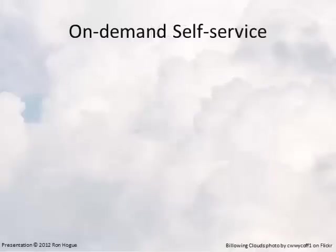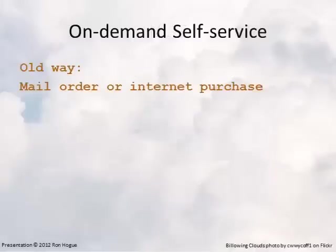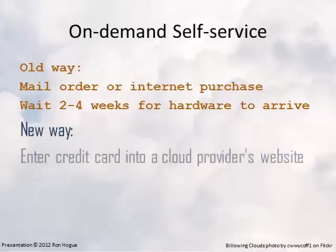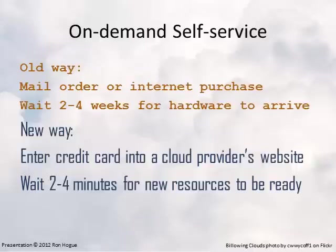So let's look at the first: on-demand self-service. In the past, we used to do a mail order for computers or purchase them over the internet, supplying payment information and then waiting two to four weeks for hardware to ship. Now, we can enter credit card information into a cloud provider's website and wait two to four minutes for new resources to be ready. Resources like CPU, RAM, and storage space are available on demand — when you need them — and you can order as much as you'd like.